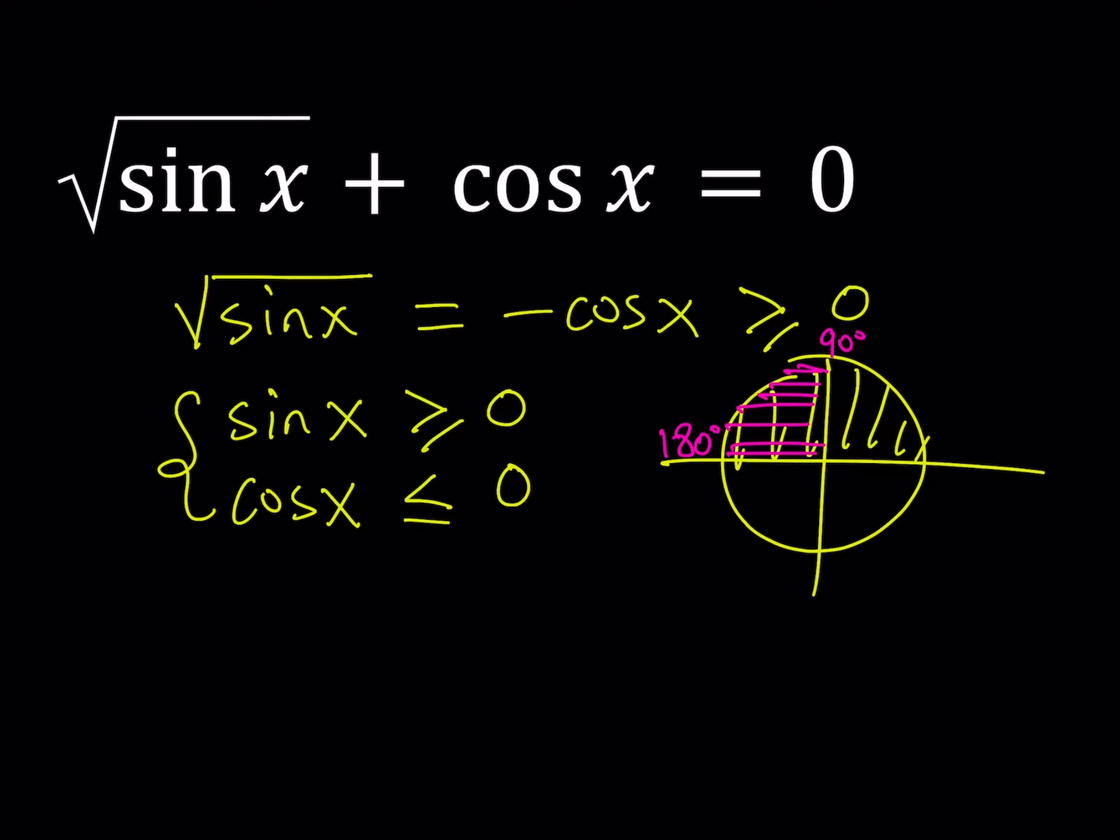After isolating the square root I'm basically going to be squaring both sides. If I square both sides, I should be getting sine x equals cosine squared x.